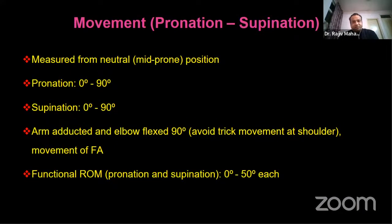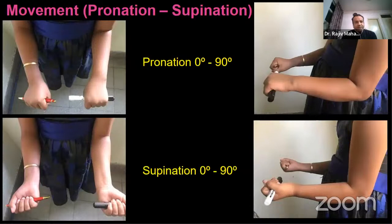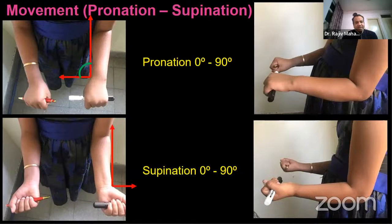Pronation and supination are measured from the neutral mid-prone position. Normal pronation and supination are each 0 to 90 degrees. The arm should be adducted and elbow flexed to 90 degrees while assessing, to avoid trick movement from the shoulder joint. The functional range of motion for supination and pronation is 0 to 50 degrees each. Pronation moves the palm to face downward, supination moves the palm upward — each is 90 degrees.